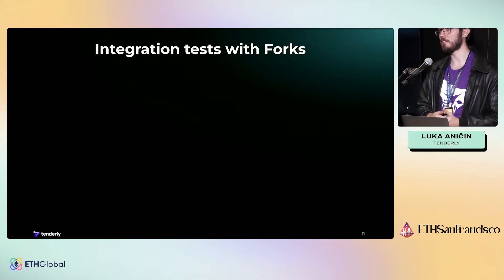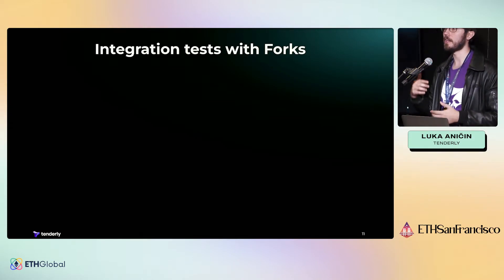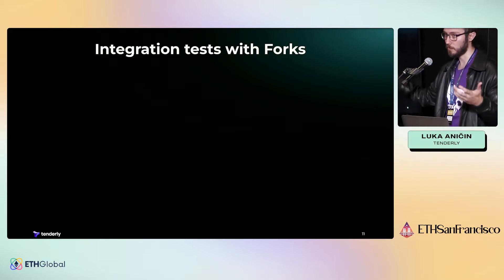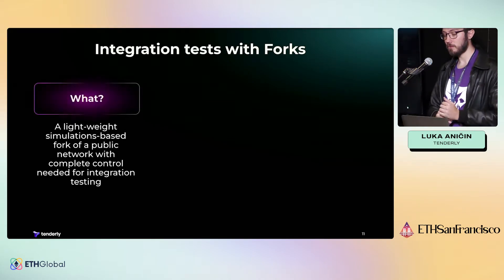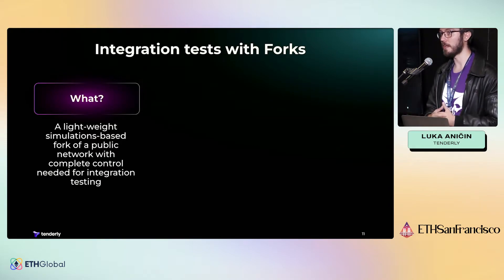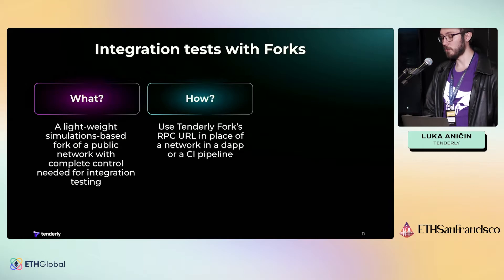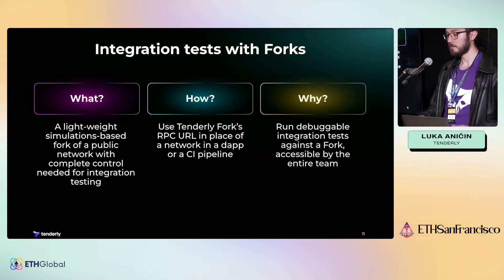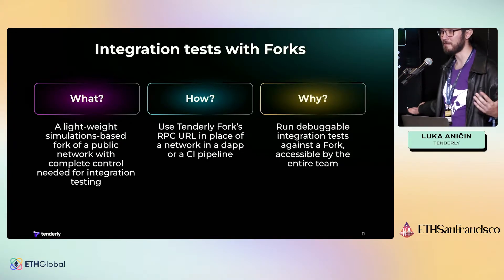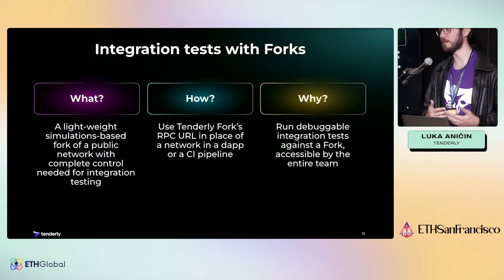We also have forks integrated with simulations. One simulation handles a single transaction, but what if you have ten transactions that rely on one another? You can spin up a fork for any network, and each transaction will change the state of the fork just as it would on the real network, so you can run transactions sequentially and observe results. Integration testing can be done this way to make sure all pieces work correctly. When you spin up a fork, you get a traditional RPC URL — just plug it into your project and interact with it like any other network.